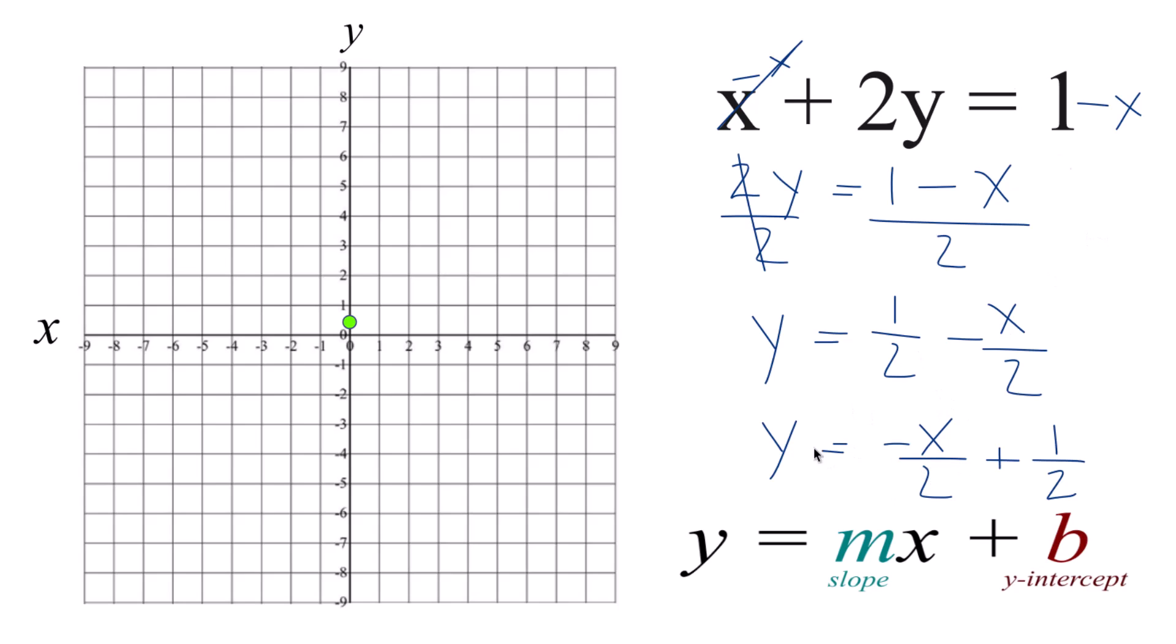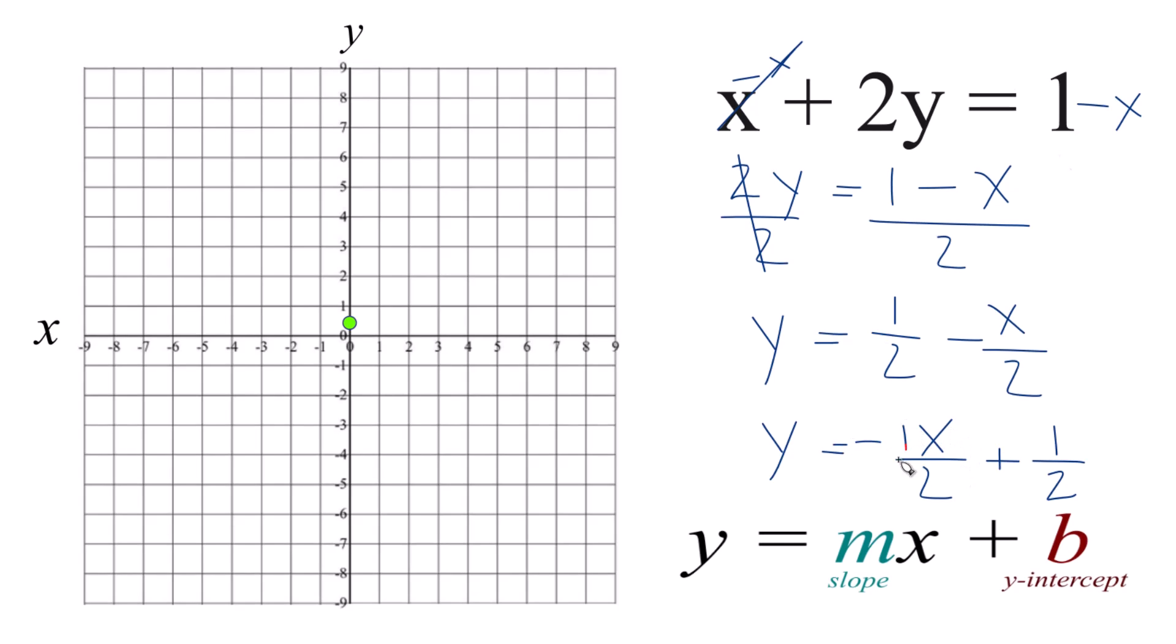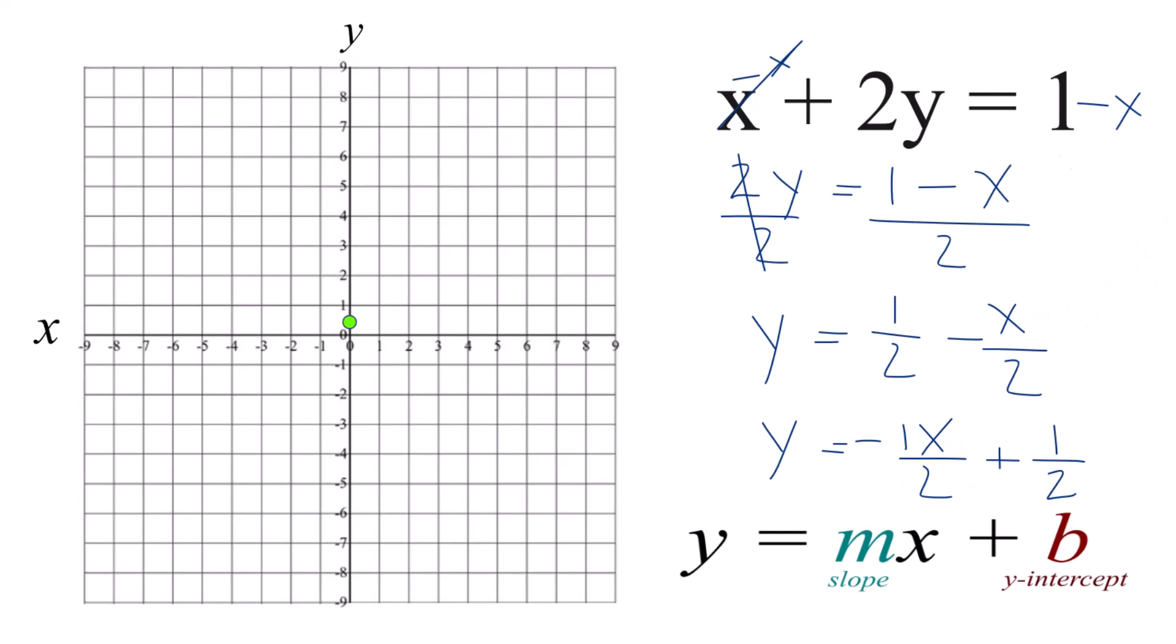Now we have this y equals negative x over 2. And I like to think of this as negative 1x over 2 because then I can just call it rise, which is the negative 1, and then run, which is the 2.